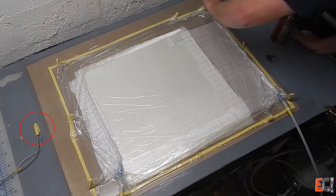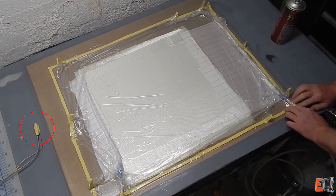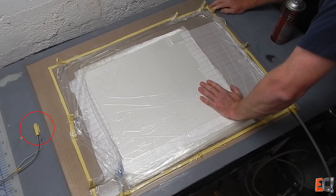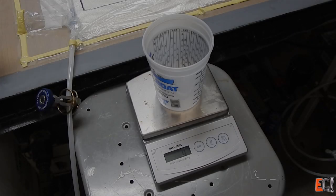You can see on the left my thermocouple for the temperature controlled table. It's stuck down with some tacky tape. This table is an aluminum honeycomb core with a heating mat underneath, which is great for infusion.